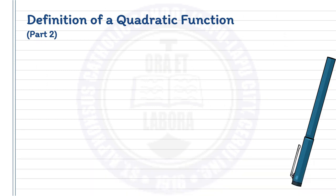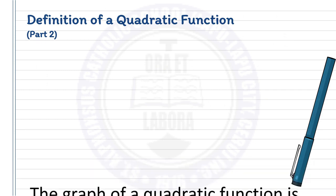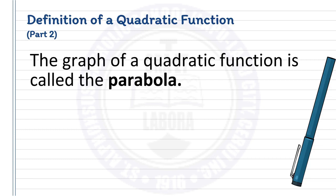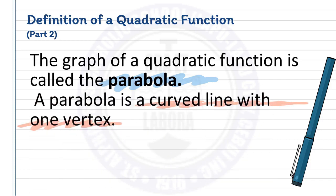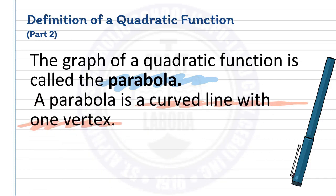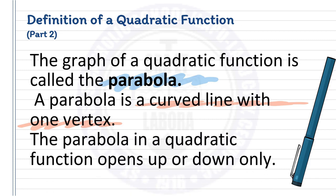We could also define a quadratic function using its graph. The graph of a quadratic function is called the parabola. A parabola is a curved line with one vertex, and it opens up or down only.